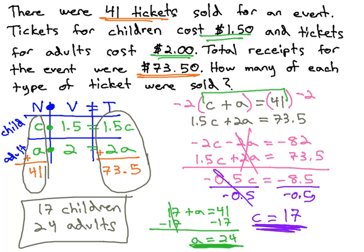We found this solution by organizing our information in the number-value-total table, putting our values in dollars and our totals in dollars, and using the columns to make our two equations.